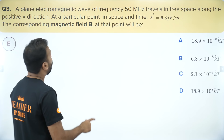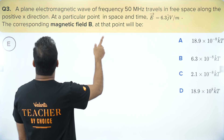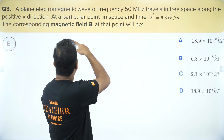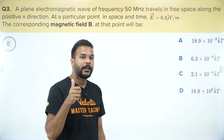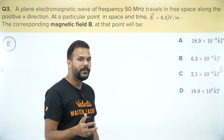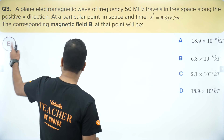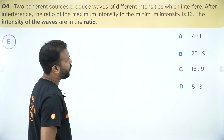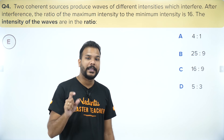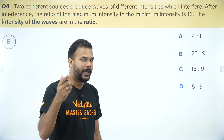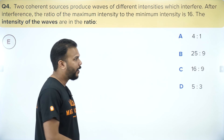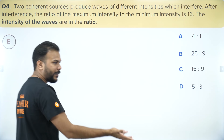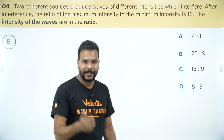The next question has electric field given for an electromagnetic wave — magnetic field is to be found. We know that the speed of light equals E/B, so using that formula you can solve it easily. Marking it as easy. The question after that is from waves: intensity maximum = (√I₁ + √I₂)², minimum = (√I₁ − √I₂)². Values are given, you find the intensity ratio easily. Marking as easy.